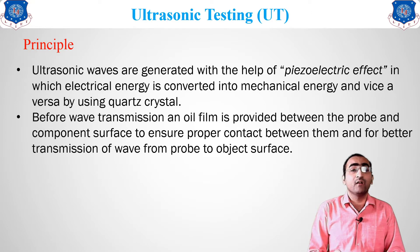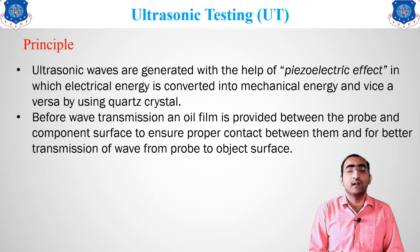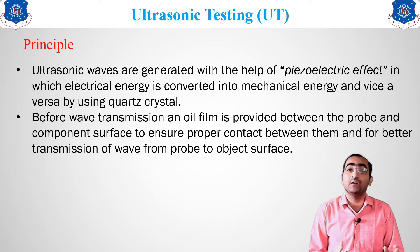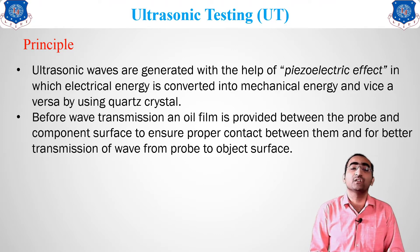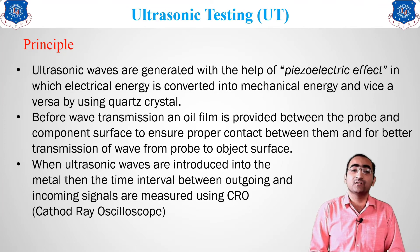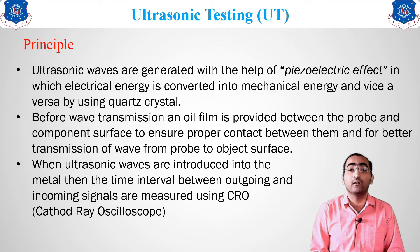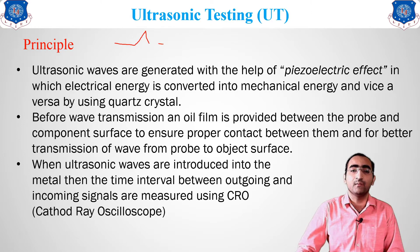Before wave transmission, an oil film is provided between the probe and the component. Inside the probe, we place a piezoelectric material where the ultrasonic sound waves are generated. The oil film transmits waves from the probe into the component surface to ensure proper contact. When ultrasonic waves are introduced inside the metal, the outgoing and incoming signals are recorded on the CRO screen — the cathode ray oscilloscope — similar to a heartbeat waveform.